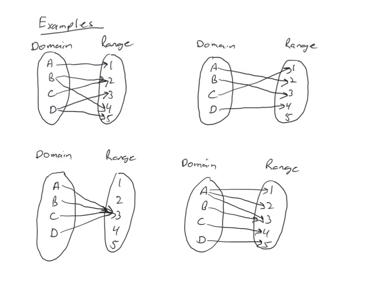One way to show a function or not a function is to look at sets graphically. Here I have set A, B, C, D as my domain, and the range is the numbers one, two, three, four, and five. Arrows represent pairings. In this first example, A is assigned one, B is assigned two and four, C is going to two, and D is going to three and five. Because B and D each have two arrows going out, this would not be a function.